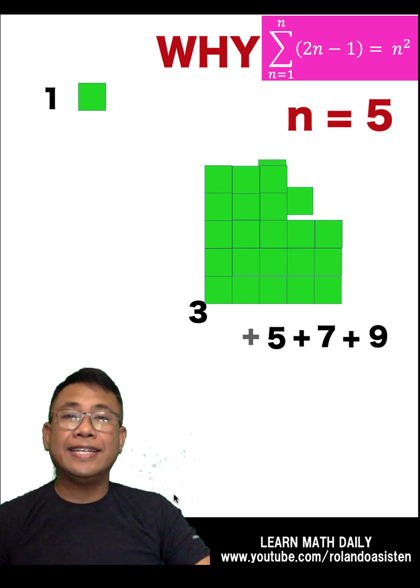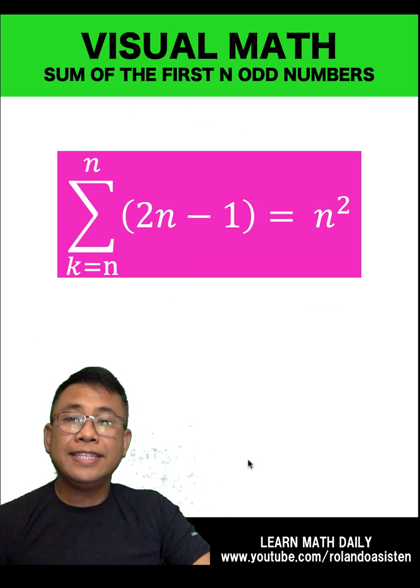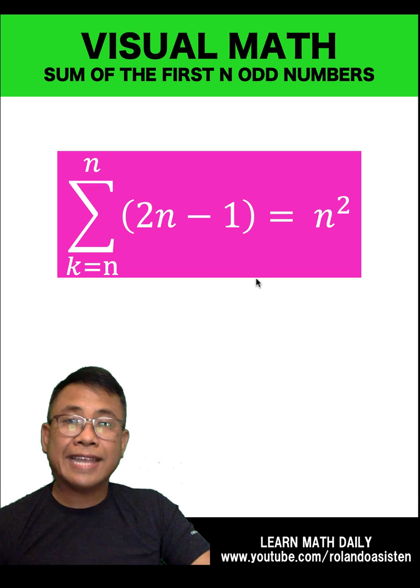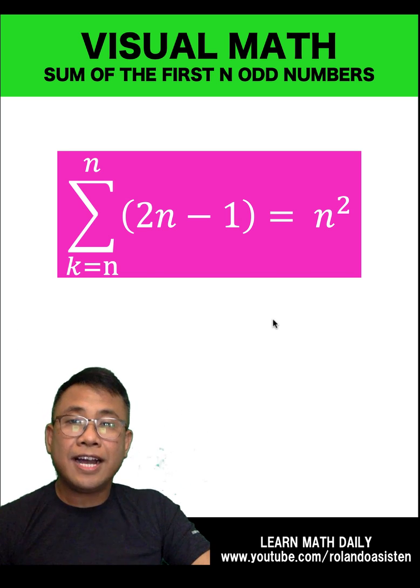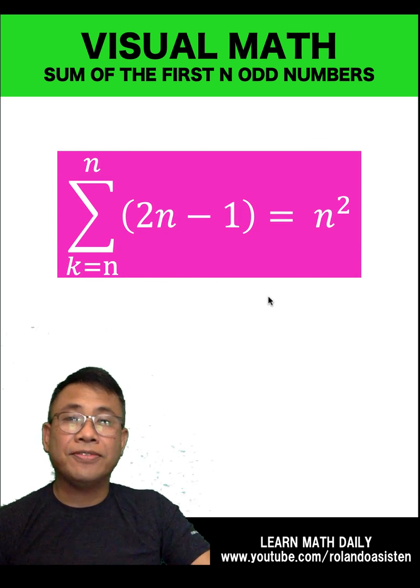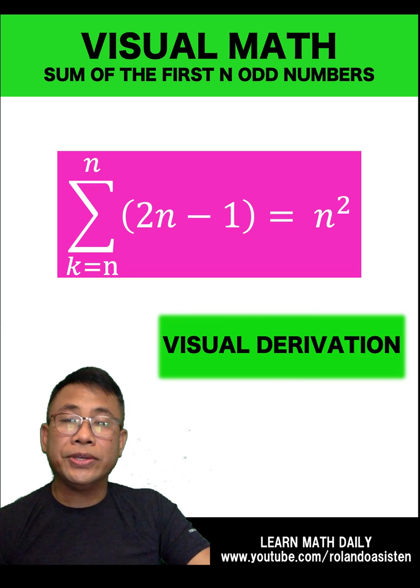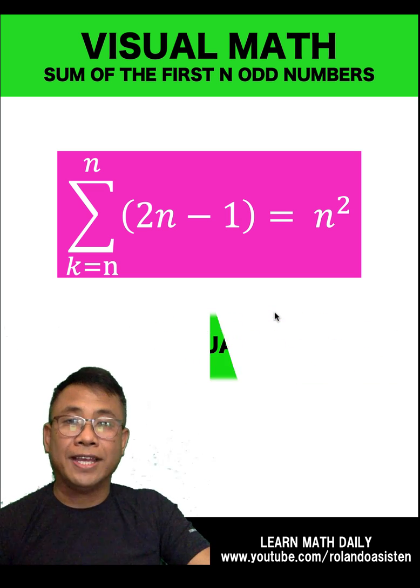Hi, Rowan Land, The Assistant here, and here is our visual math for today. This is the formula for the sum of the first n odd numbers. Have you ever wondered why is this the formula? In this video, I'm going to show you the visual derivation of this formula. Let's begin.